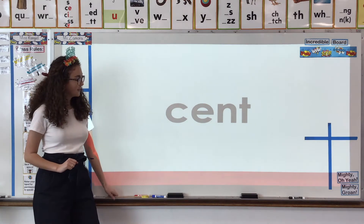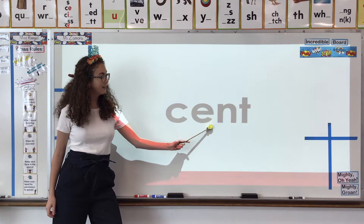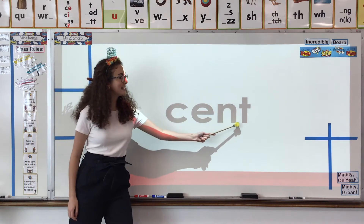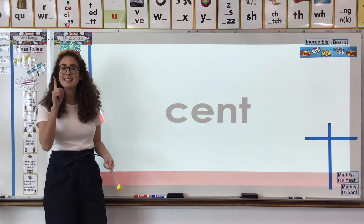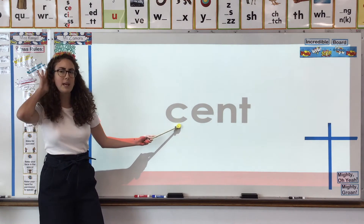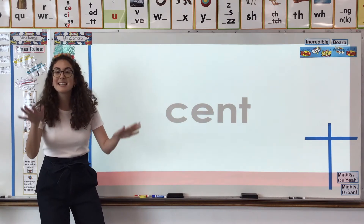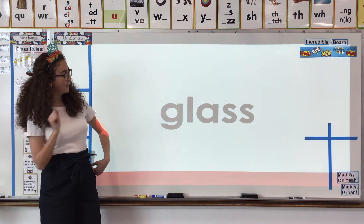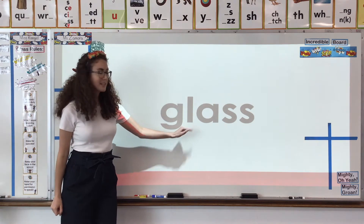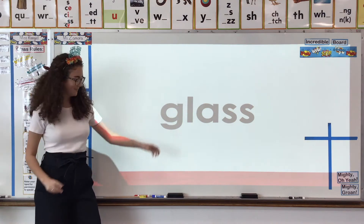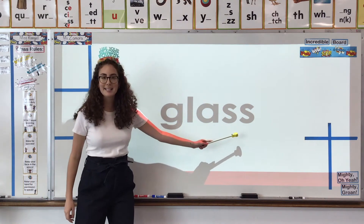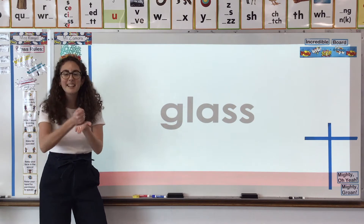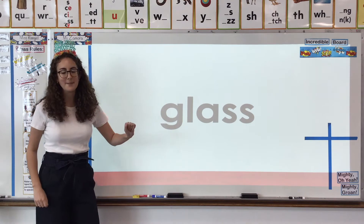Okay, next one. What do we got? C with an E. Sent — like a penny is one cent. What sound is C making? The soft sound because of this E. Awesome. Next one. G and there's an L. Glass. So what sound is G making? The hard sound because there's an L behind it.